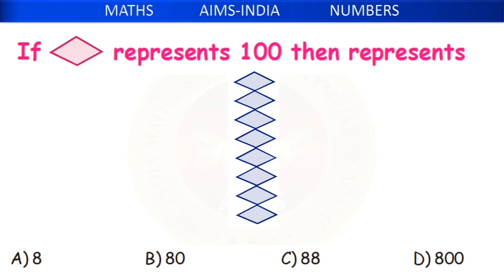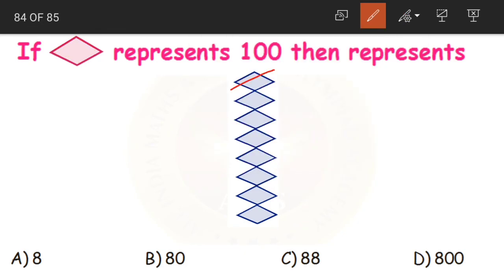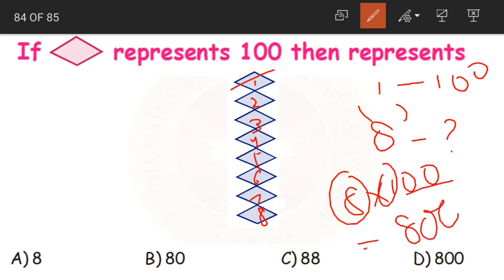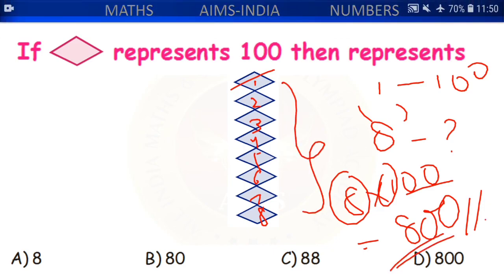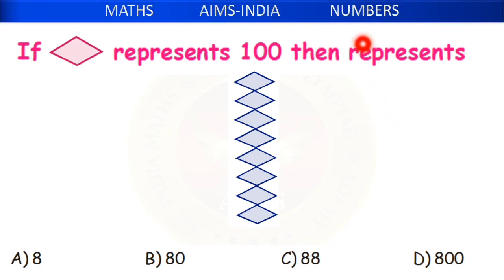The last question for today: if 1 rhombus symbol equals 100, what does the figure represent? Count the rhombuses: 1, 2, 3, 4, 5, 6, 7, 8 — there are 8 rhombuses. Since 1 rhombus = 100, then 8 rhombuses = 8 × 100 = 800. These 8 rhombuses represent 800 — that is option D. With this, we have come to the end of today's class and have completed all the previous Olympiad questions from the topic of numbers.